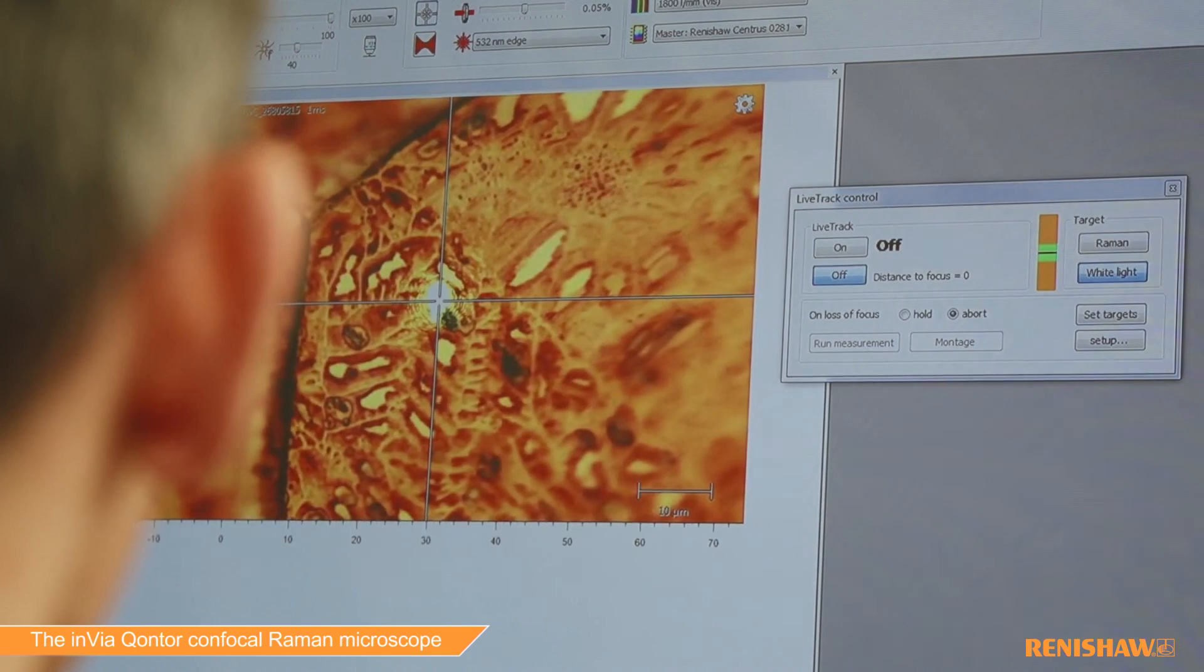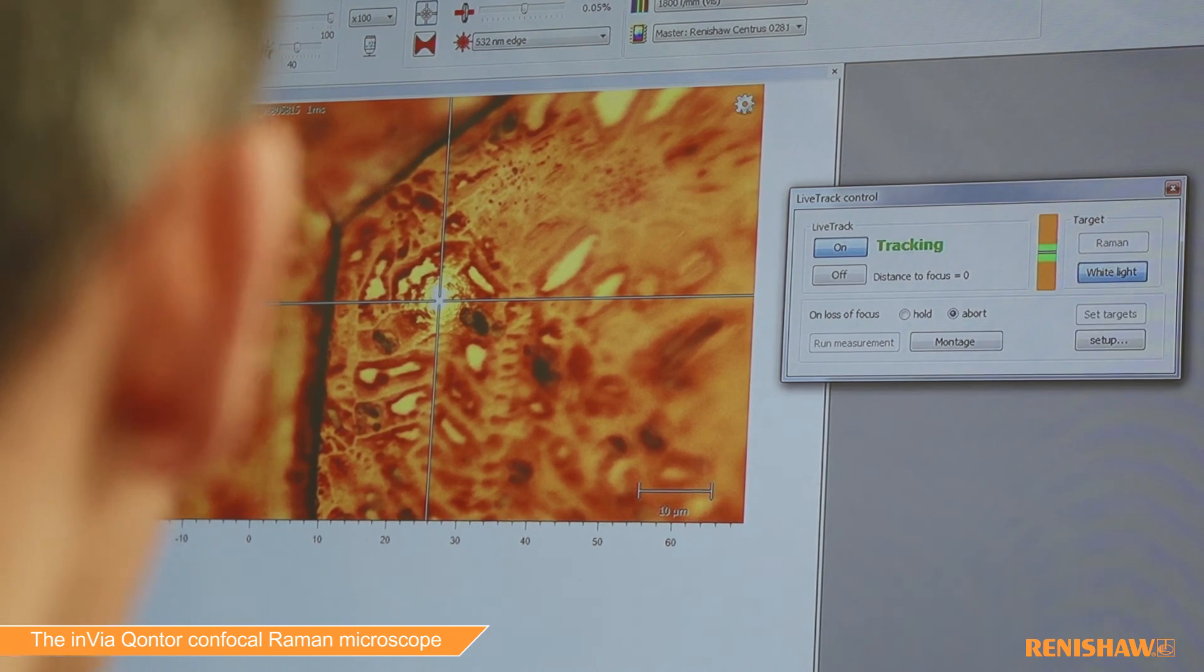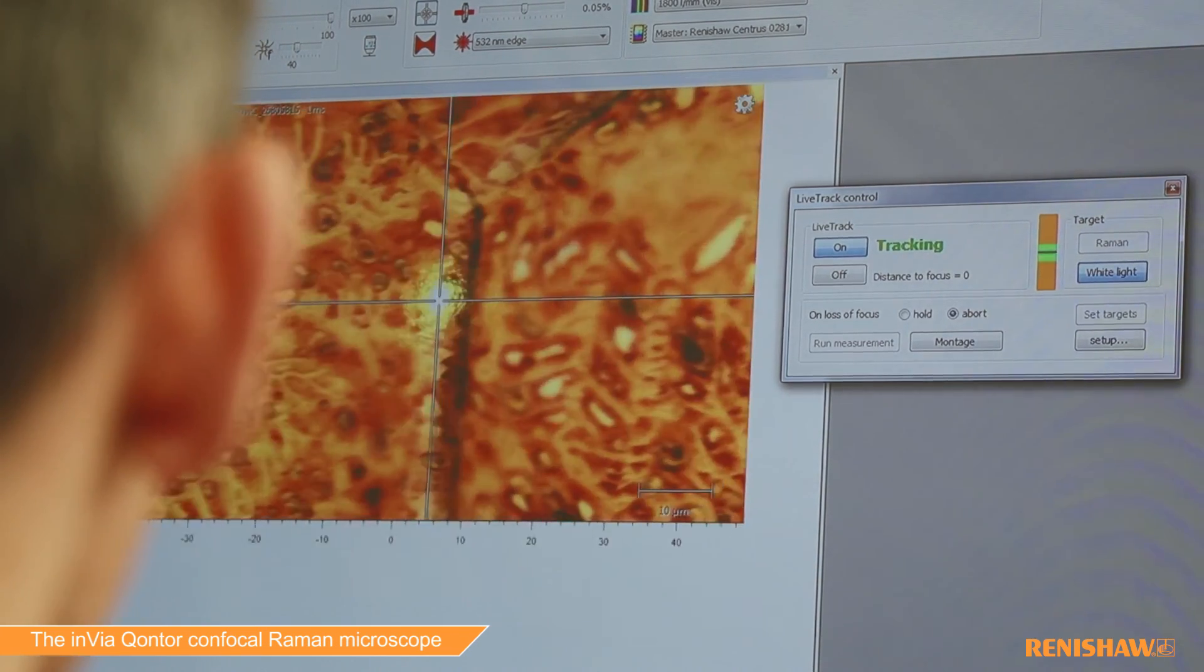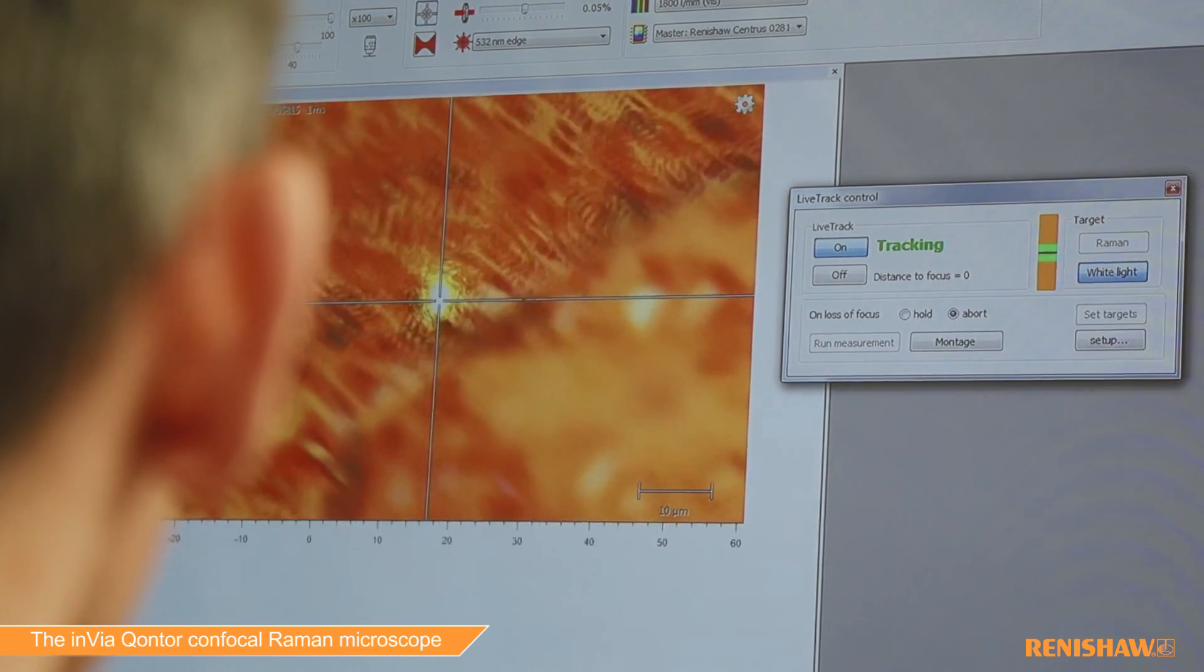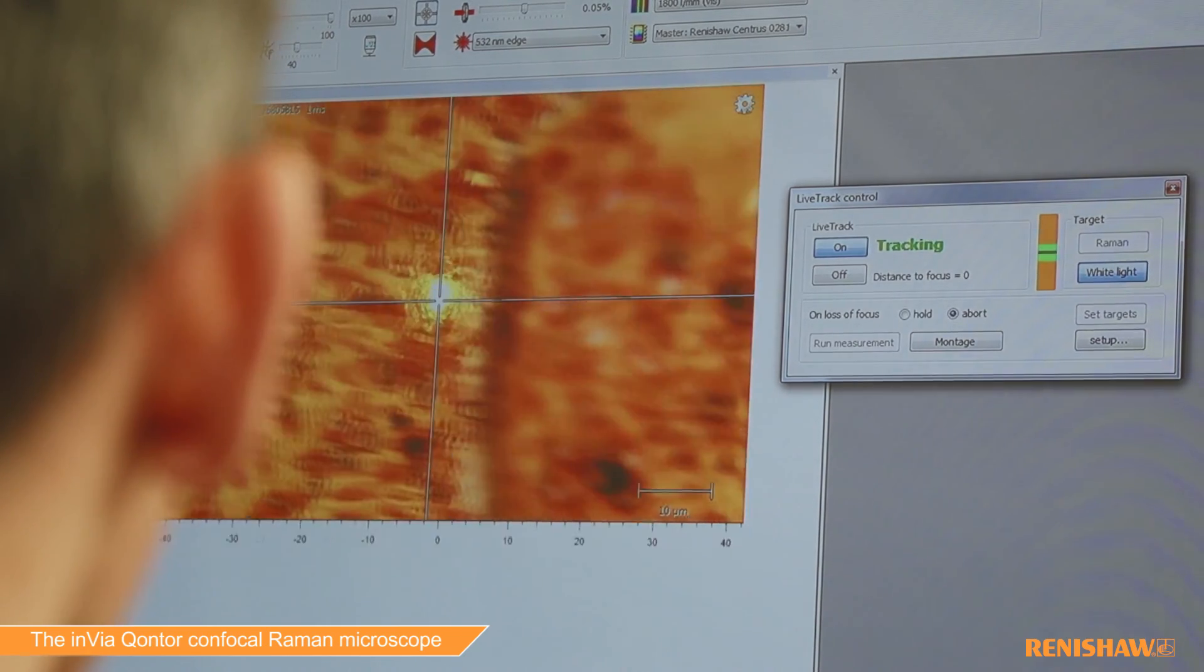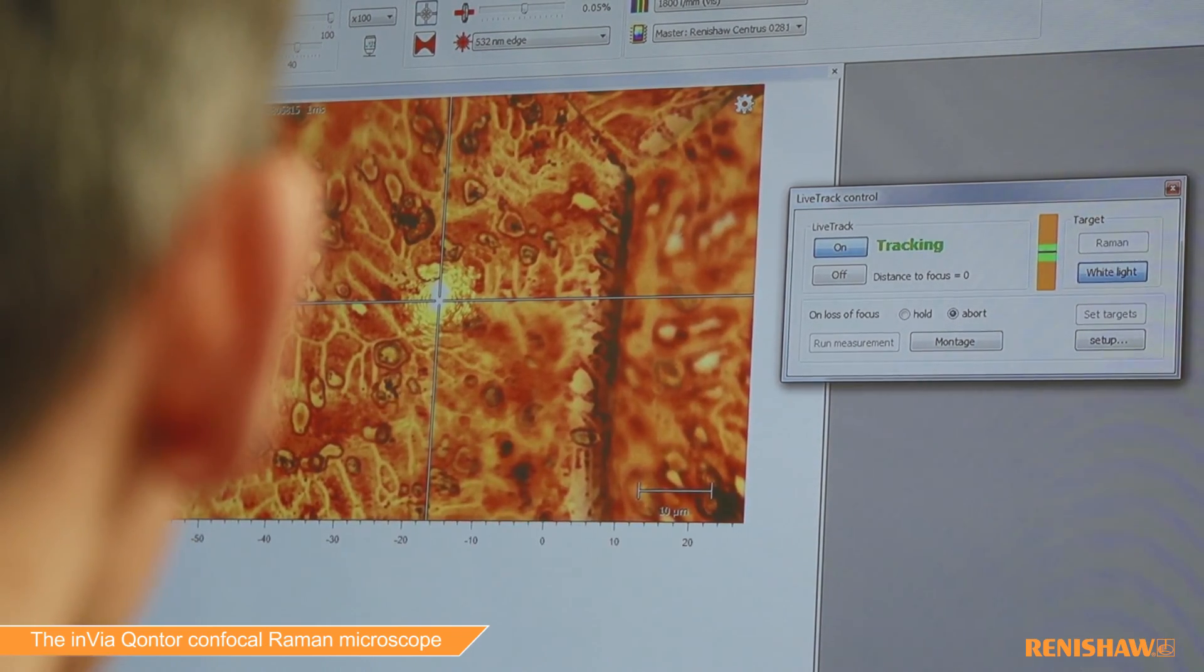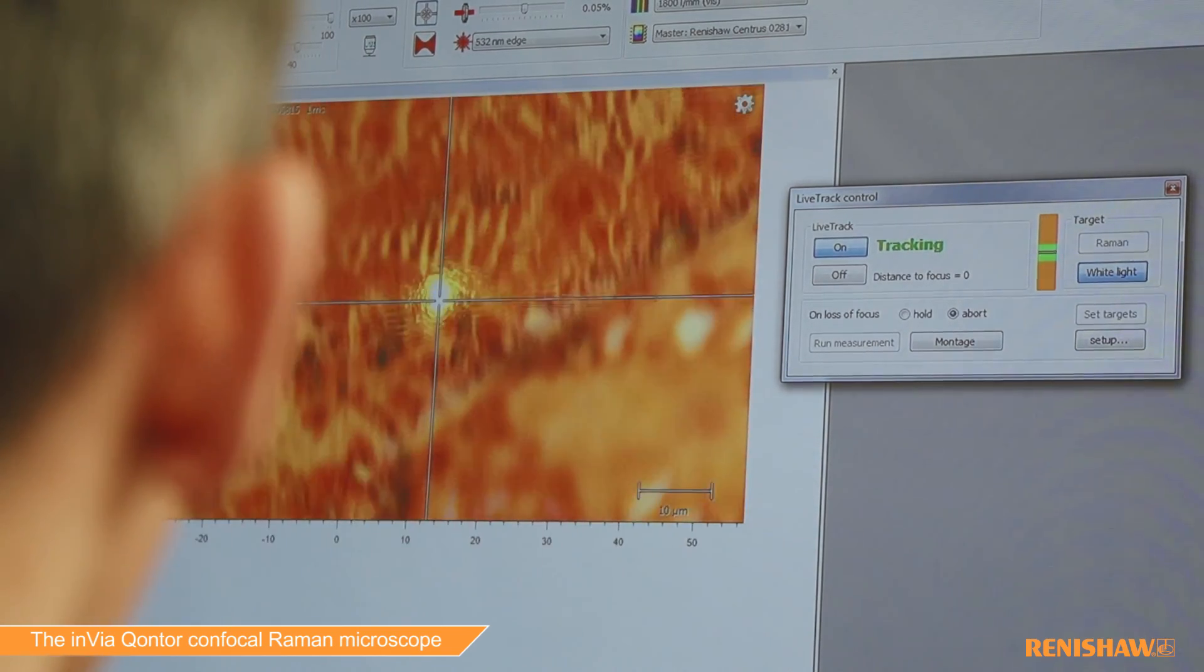So all you need to do, go back to the region which is in focus. We're just going to turn on LiveTrack. Now, as we go across these interfaces, you can see that they all track the focus perfectly. Of course we can apply this now to map data collection to ensure our Rama data is going to be in focus over the whole topography of the sample.